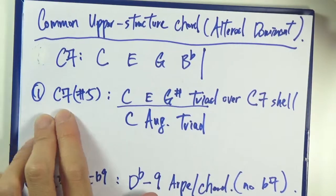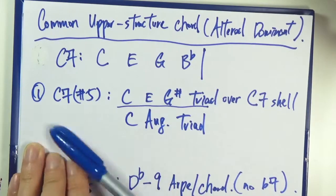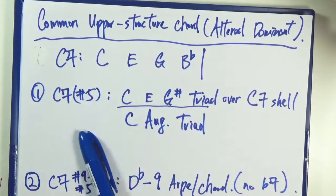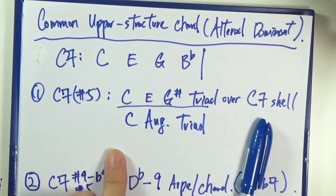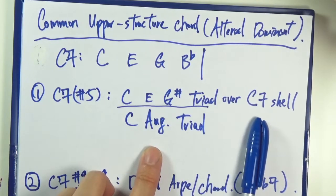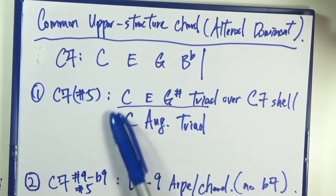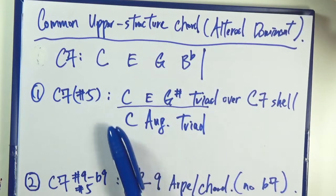First one: C7#5. In order to yield a C7#5, the upper structure way of doing things is you can actually play a C augmented triad over a C7 shell or simply a C bass note. Technically this one is not actually an upper structure chord since you're starting on C, but it's used quite often so I've included it here.